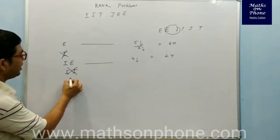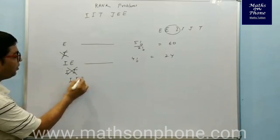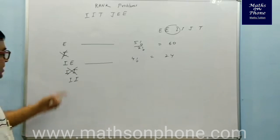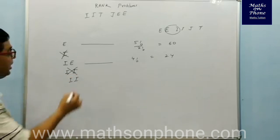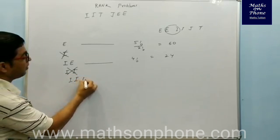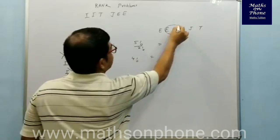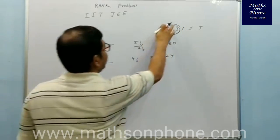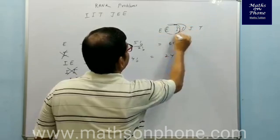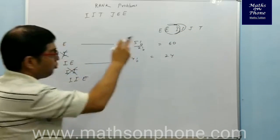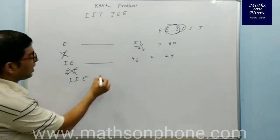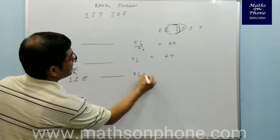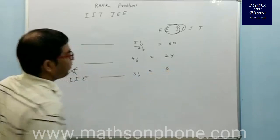Next, take I-I (which is the actual start, so cancel), then move to I-I-E. With three letters I, I, E fixed, three letters are remaining. Those can be arranged in 3! = 6 ways.